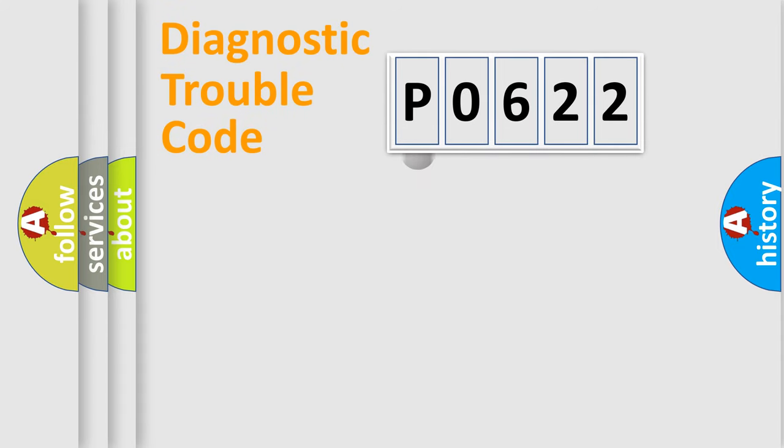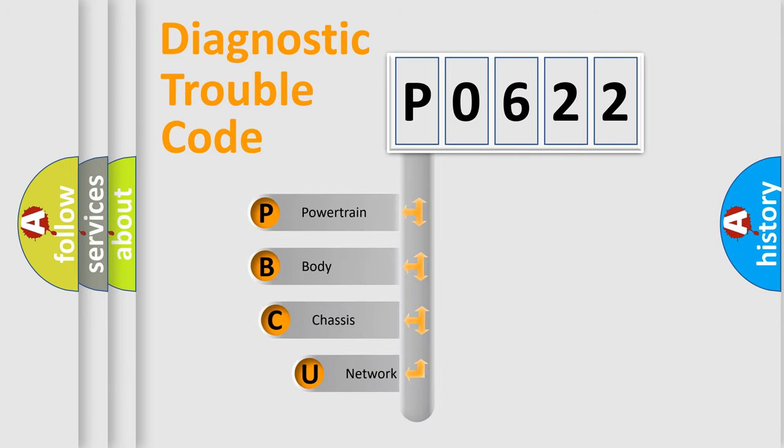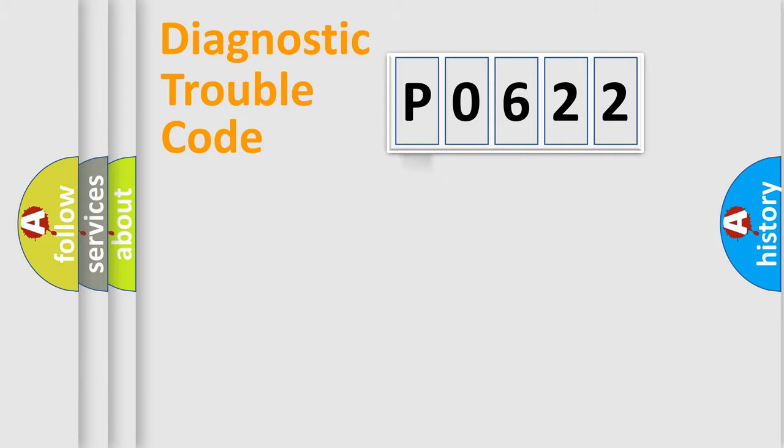First, let's look at the history of diagnostic fault code composition according to the OBD2 protocol, which is unified for all automakers since 2000. We divide the electric system of automobile into four basic units: Powertrain, Body, Chassis, Network. This distribution is defined in the first character code.